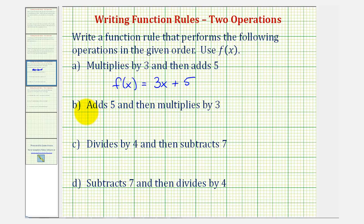Looking at part b, the function now first adds five and then multiplies by three. So we'll have to be a little more careful on part b. Our function f(x) is going to be equal to, we'll first add five to the input of x. So that would be x + 5. But now we want to multiply this entire quantity x + 5 by three. So we'll have to put x + 5 in parentheses, and then to multiply, we can put the three up here in front. This would be three times the quantity x + 5.